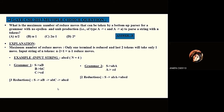Gate CSE 2013 multiple choice question: what is the maximum number of reduce moves that can be taken by a bottom-up parser for a grammar with no epsilon productions and no unit productions, to parse a string with n tokens? Epsilon production is when variable A produces epsilon; unit production is when a variable produces a single terminal. These two types of productions are excluded from the grammar.